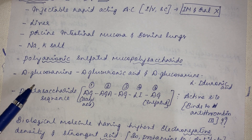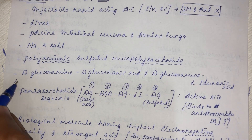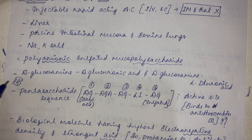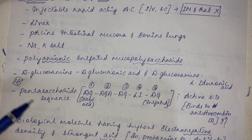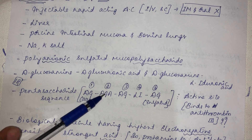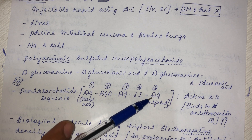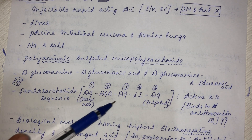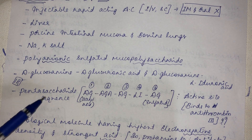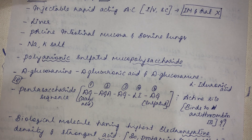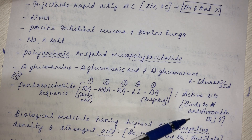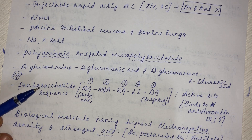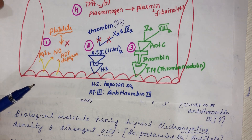High molecular weight heparin has many monosaccharide units. If you find a sequence of five units — D-glucosamine, D-glucuronic acid, D-glucosamine, L-iduronic acid, and sulfated D-glucosamine — this is called the pentasaccharide sequence. This pentasaccharide sequence is the active site of heparin, to which antithrombin-3 binds.